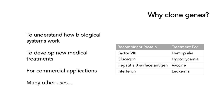If we just look at the medical applications, recombinant proteins are used to treat a number of different disorders. For instance, factor VIII is used to treat hemophilia, glucagon is used to treat hypoglycemia, the hepatitis B surface antigen is used in vaccines against hepatitis B, and interferon is often used as a treatment for leukemia. It's very common to use recombinant technologies in a whole lot of medical settings.